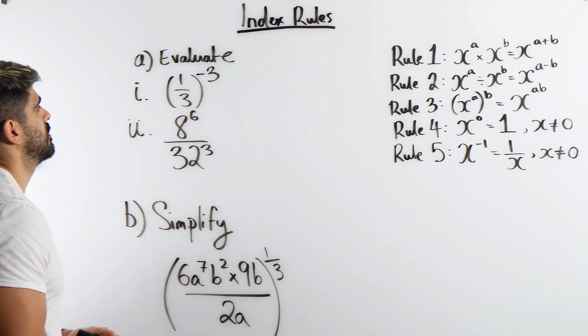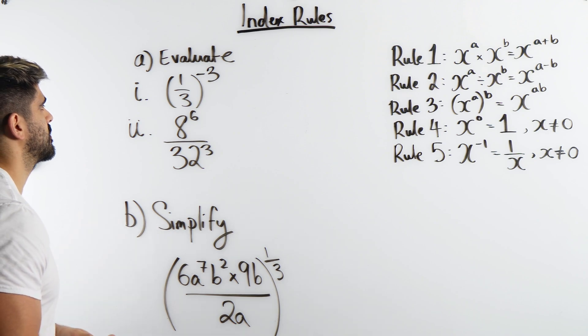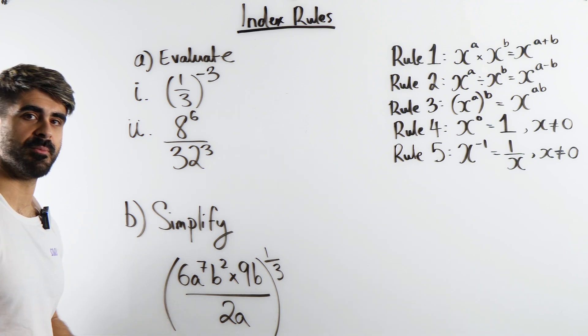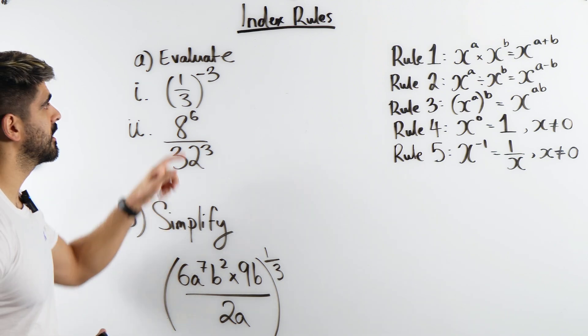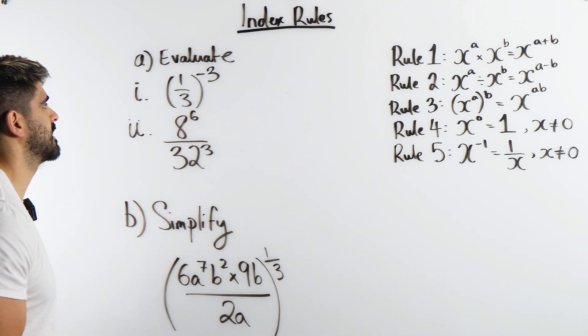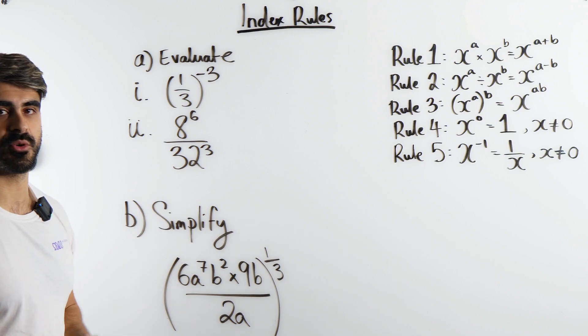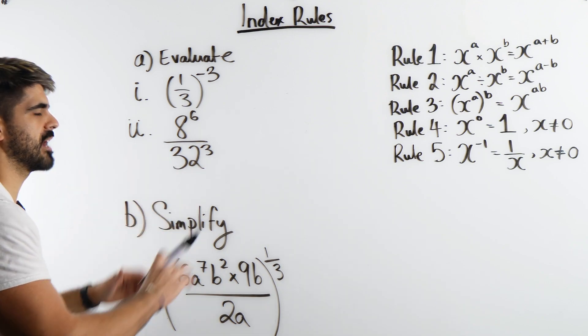So question 1a: evaluate 1 third to the power of minus 3. Okay, what's a very common mistake students do? If they don't know their rules they'll just multiply this by the negative, they'll say minus a third and then they will cube that. Remember this is all non-calculator as well.